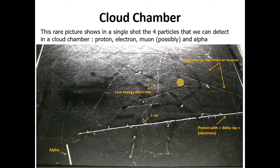Now we are seeing the tracks of the particles. This rare picture shows in a single shot the four particles that we can detect in a cloud chamber: proton, electron, muon possibly, and alpha. So you can see we have proton, delta rays, low energy electrons, high energy electrons or muons, and the alpha rays.